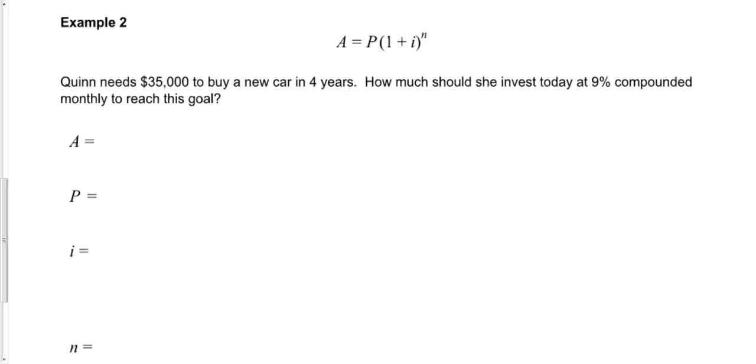In this next example, it tells us that Quinn needs $35,000. If he needs it, it means he doesn't have it. So $35,000 in the future means that that's going to be the A value.